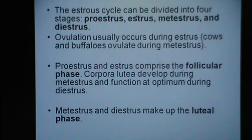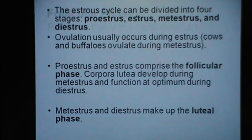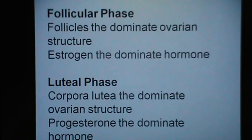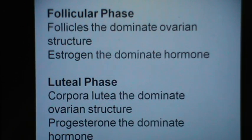During metestrus and diestrus, progesterone starts increasing and they collectively make up the luteal phase of the estrus cycle. During the follicle phase, the follicle is the dominant ovarian structure and estrogen is the dominant hormone. During the luteal phase, the corpus lutea are the dominant ovarian structure and progesterone is the dominant hormone.